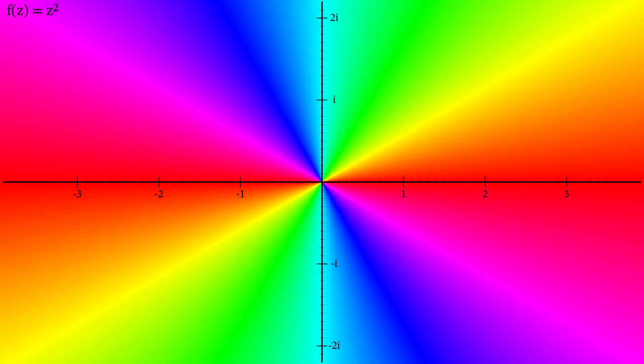Sometimes these roots may be in the same place, such as the function z squared. In this case, we can still see the double root on our phase portrait. The colours meet at zero twice, indicating a double root. Notice that the colours are still in the same rotational order though.